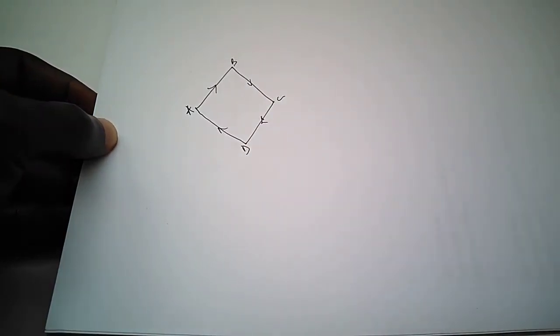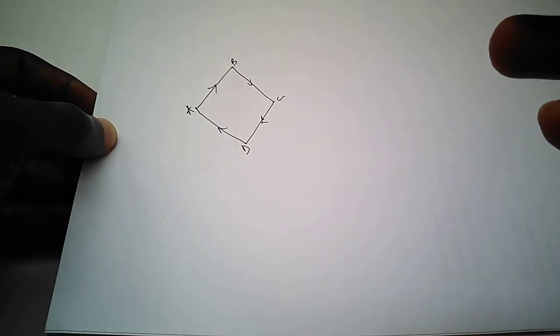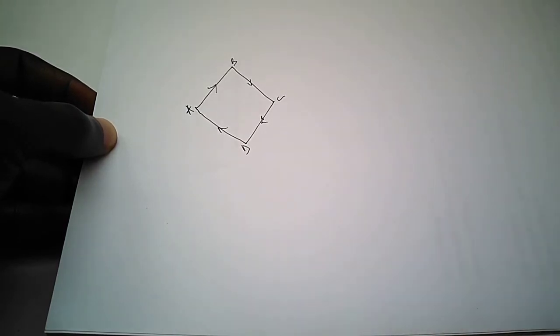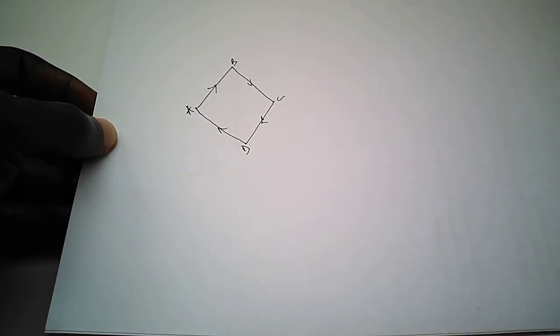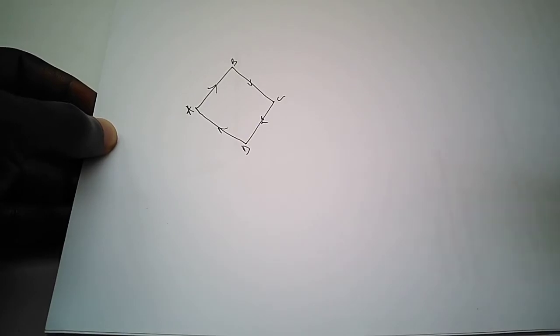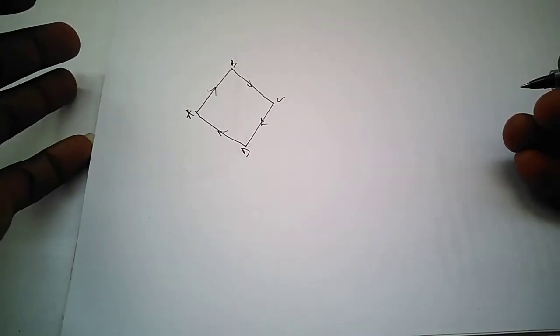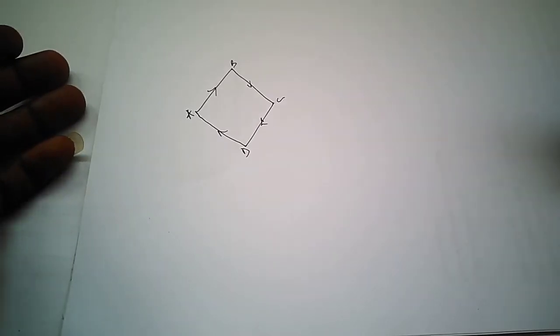Now if you want to liken it to something we already know in physics, we can say a traverse is a vector quantity because scalar quantities have magnitude but no direction, whereas vector quantities have magnitude and direction.